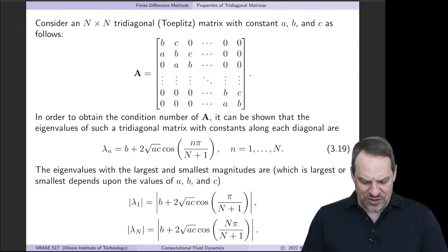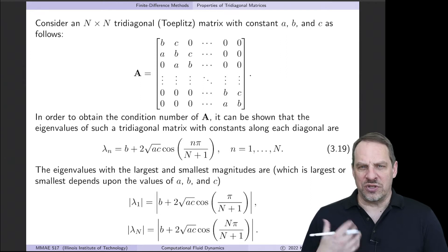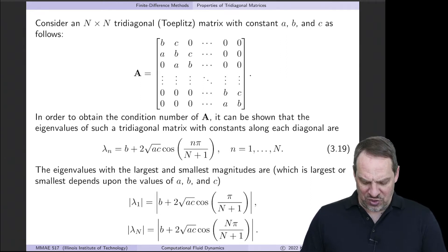In that particular case, you can show that the eigenvalues are of this form: λ_n = b + 2√(ac) cos(nπ/(N+1)), where little n is the index going from 1 to capital N, which again is the size of the matrix, the number of unknowns in our system of equations.